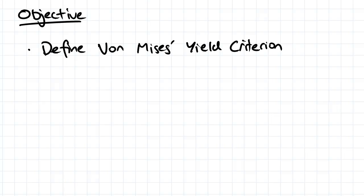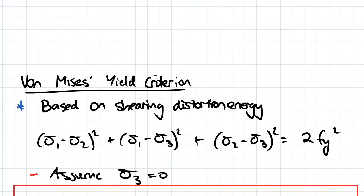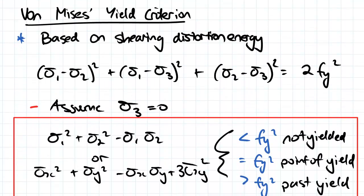Hey guys, the objective for this video is to define von Mises' yield criterion. So von Mises' yield criterion is actually based on shearing distortion energy, so it's quite different to Tresca's in that way.